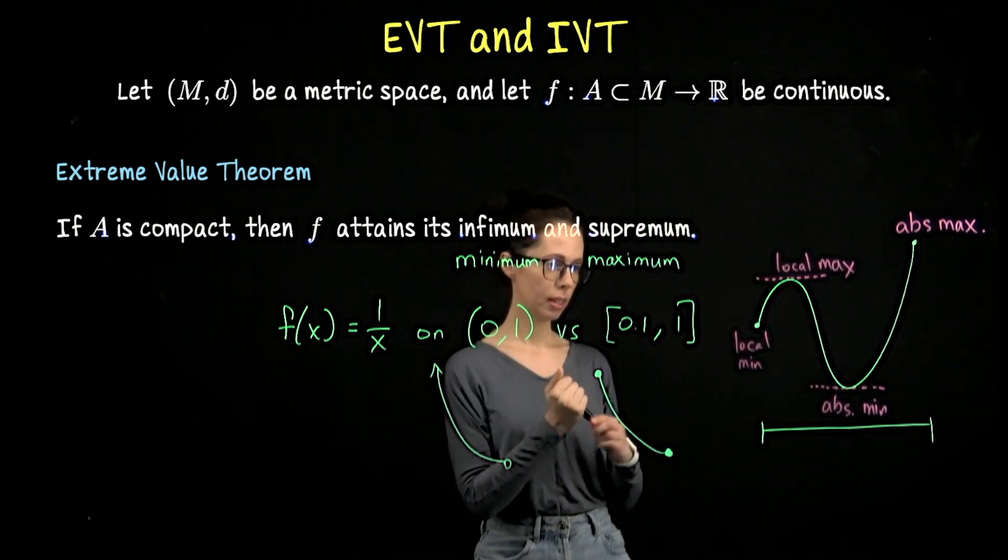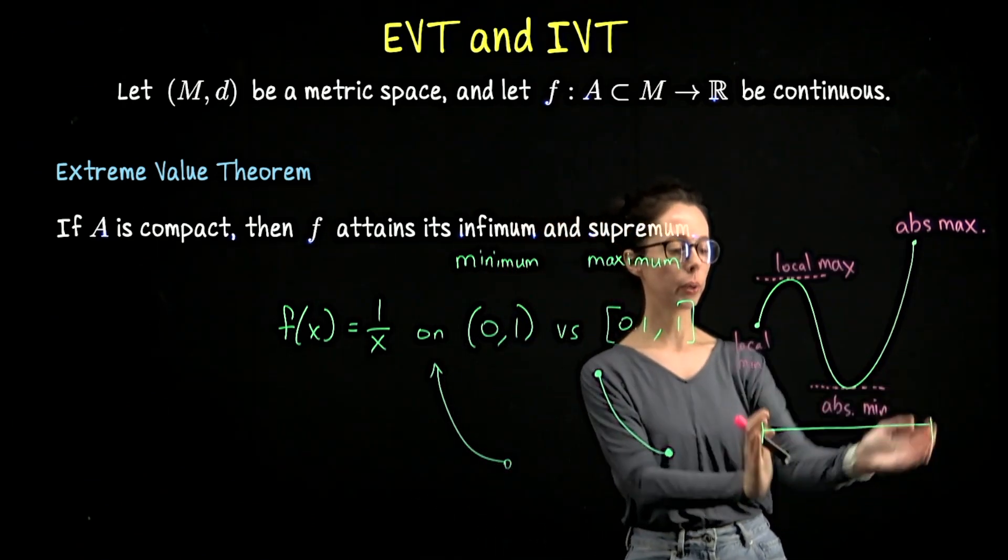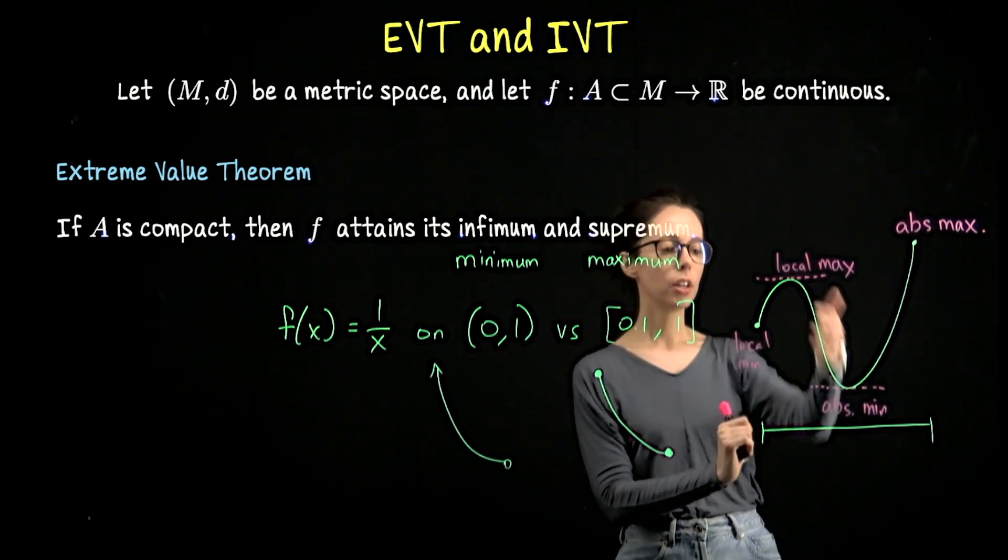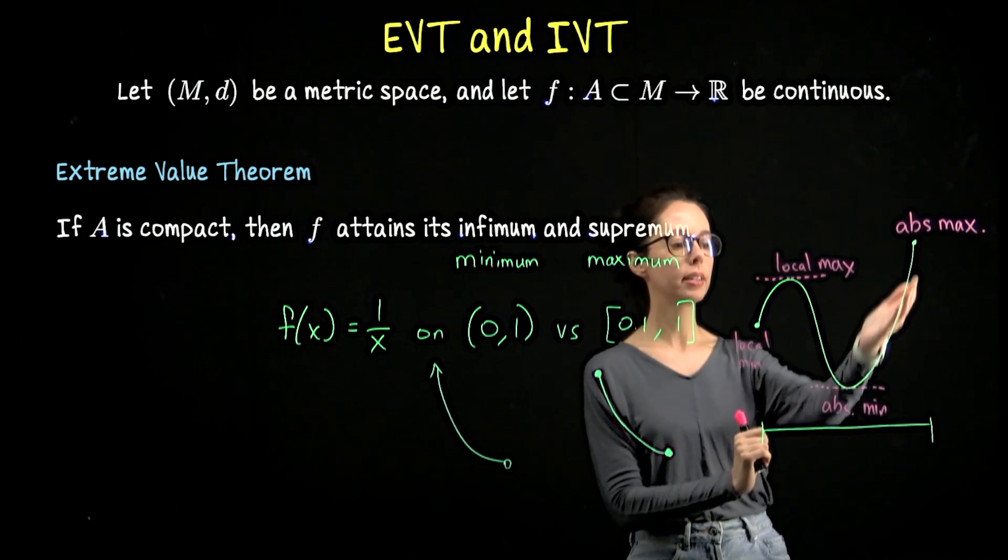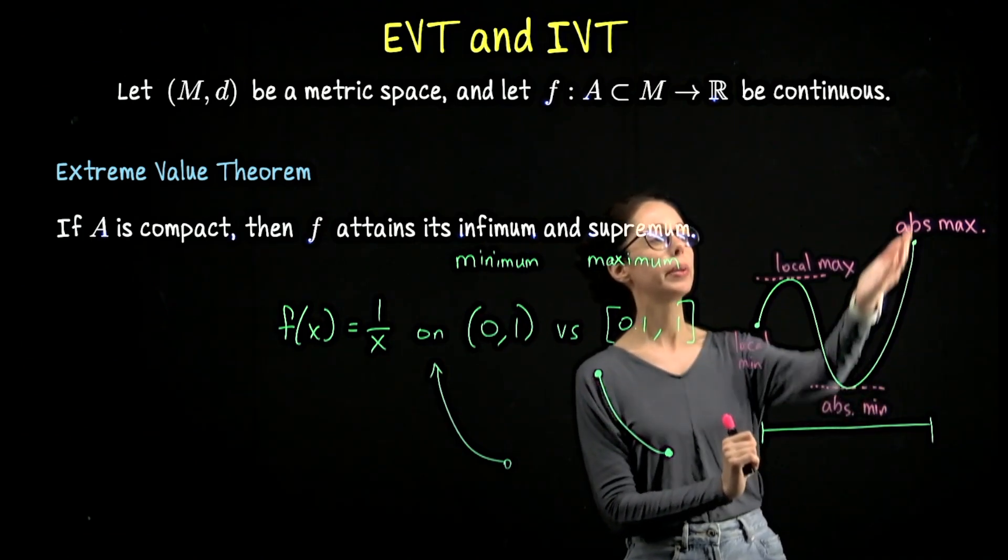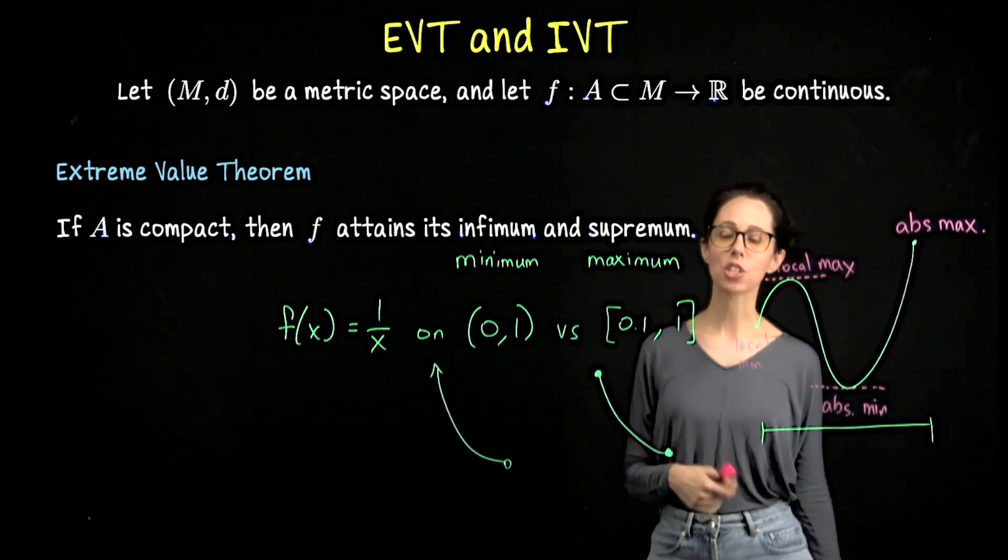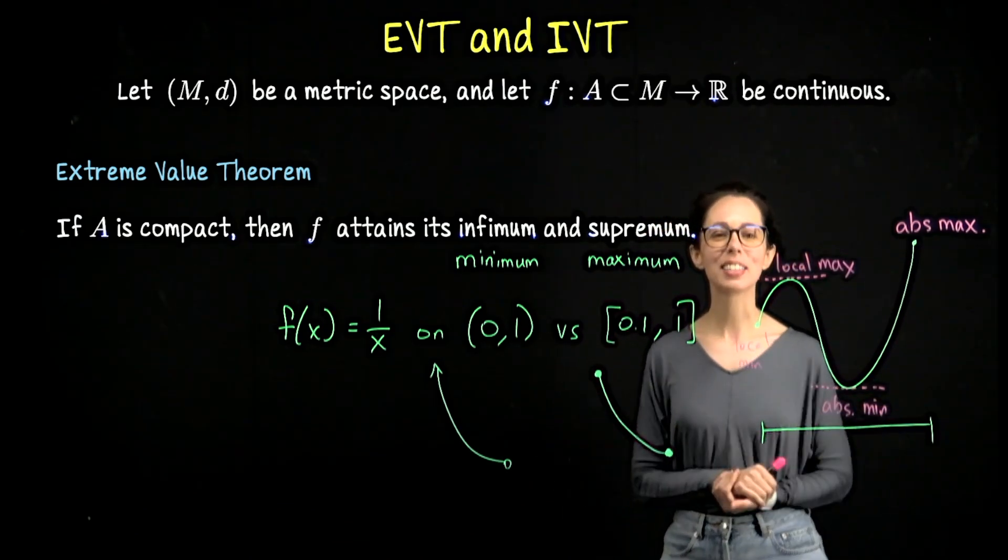This is where we actually have the absolute maximum for this function. Here, just relative to this domain, I would call this a local min, whereas this is the absolute min and this is a local max. If this interval were open, then we would not attain this maximum. We would have two local extrema, but we would not hit the supremum value.